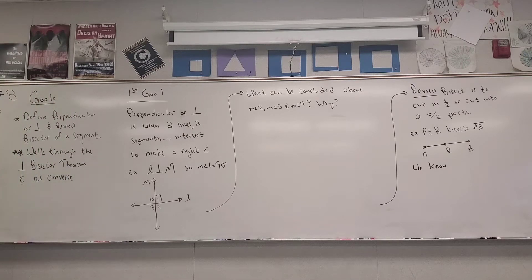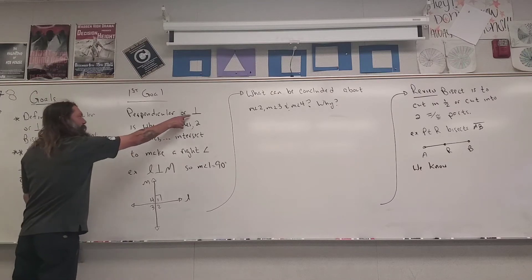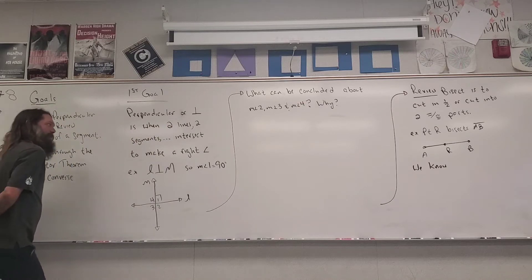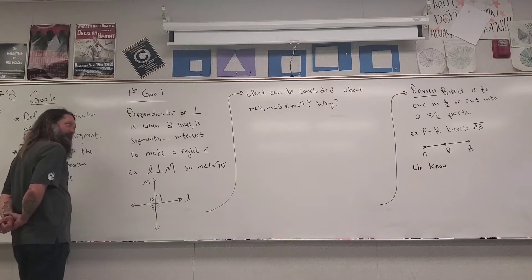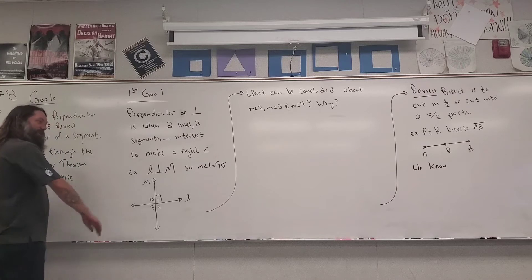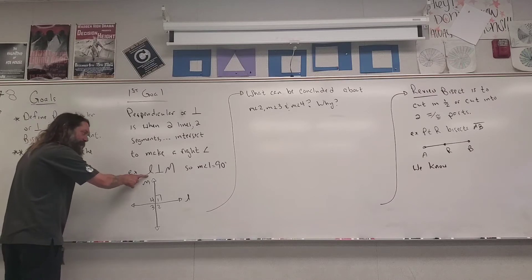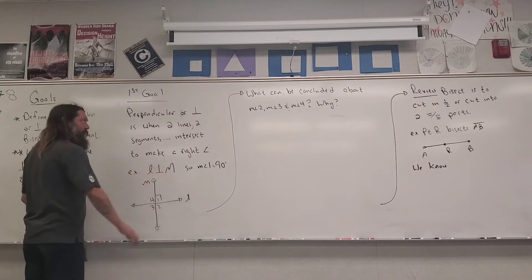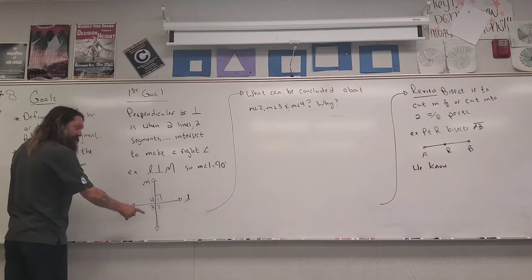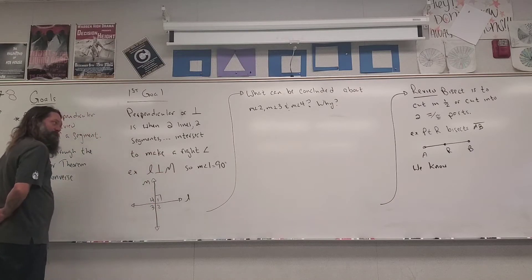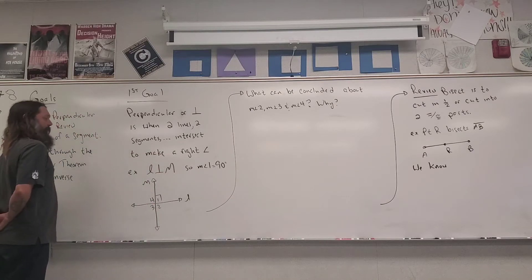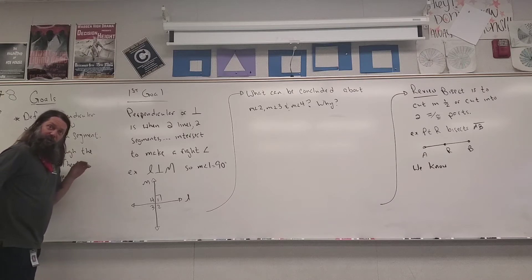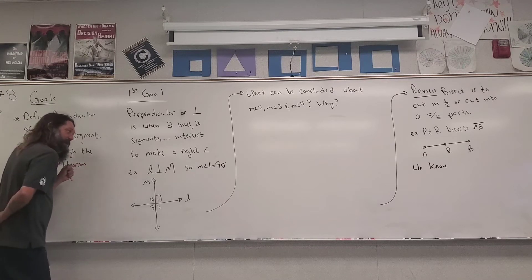Perpendicular — or this symbol for perpendicular — is when two lines, two segments, or whatever, intersect to make a right angle. So an example: line L is perpendicular to line M, so it's going to make a right angle. The measure of angle one is 90 degrees. This is an example of being perpendicular: two lines intersecting to make a right angle.